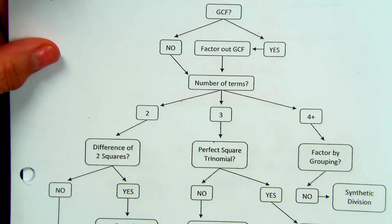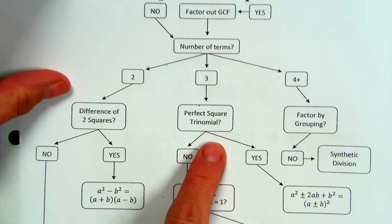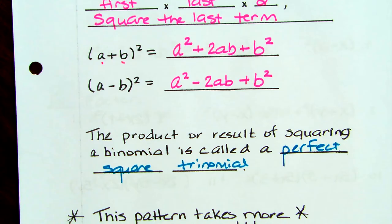Going back to the flow chart: we've done GCF, we've done four terms, we've done all the two-term cases, and now we're looking at three terms. What we're focusing on today is just the perfect square trinomial, and it will factor into the square of the binomial.